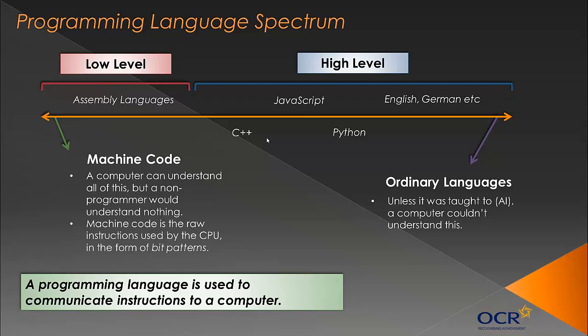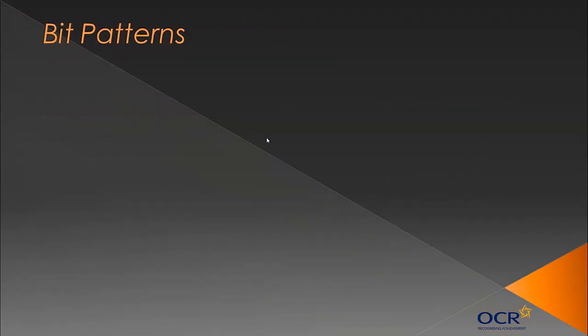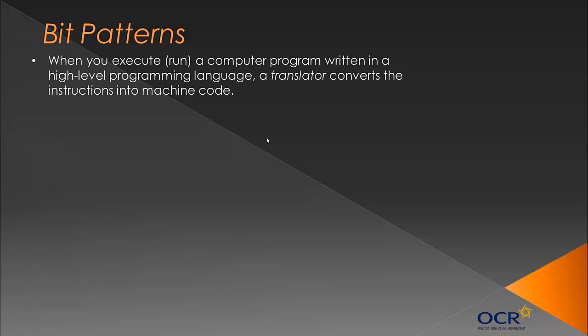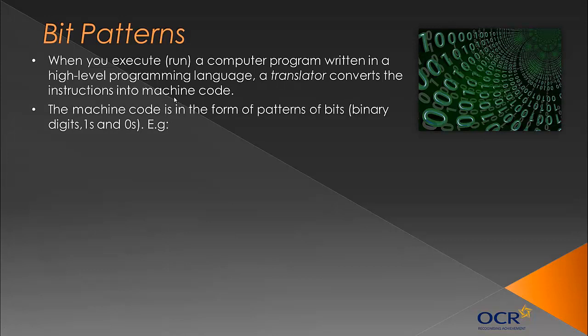It's important to understand that a programming language is simply used to communicate instructions to a computer — you use it to control a computer in some way. When you execute a program written in a high-level language, a translator converts the instructions into machine code. A translator translates what you've written into machine code so the computer can use it. That machine code is in the form of patterns of bits — binary digits, ones and zeros.